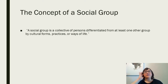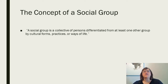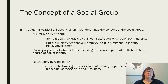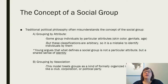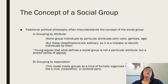One important concept for understanding Young's theory is the social group. For her, a social group is a collective of persons differentiated from at least one other group by cultural forms, practices, or ways of life. Traditional political philosophy often misunderstands this concept. Sometimes people group individuals by attributes like skin color, genitals, whether you're male or female, or how old you are. But these classifications are arbitrary, so it is a mistake to identify individuals by them.